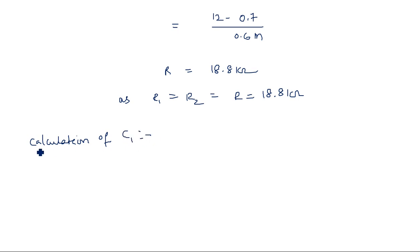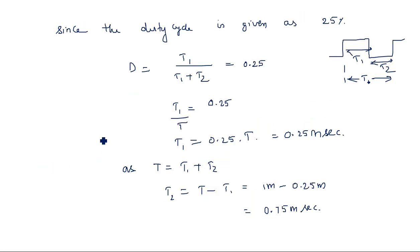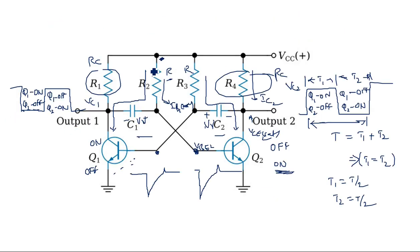For C1 calculation: since the time periods are different, it is an unsymmetrical waveform, so the time constants are also different. In this case, the resistors are assumed equal and the capacitors are different. The time constant is R × C for each side. If the capacitors were also the same, it would be a symmetrical waveform.